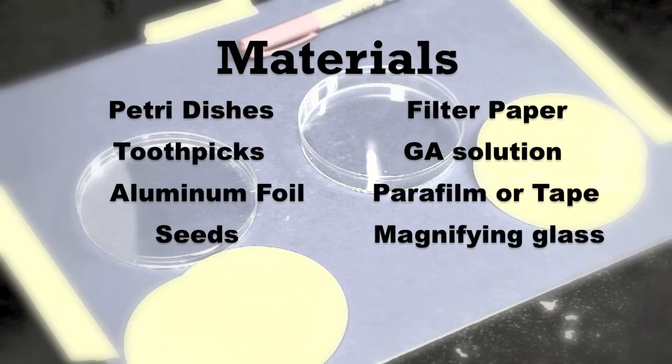For this experiment, you will need petri dishes, filter paper, toothpicks, GA solution, aluminum foil, parafilm or other tape, a magnifying glass, and of course, your seeds.